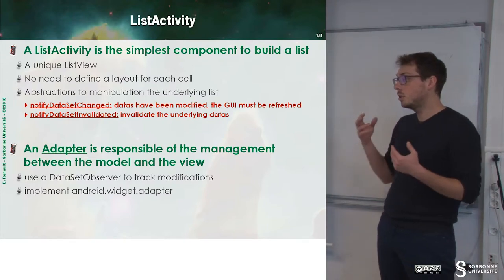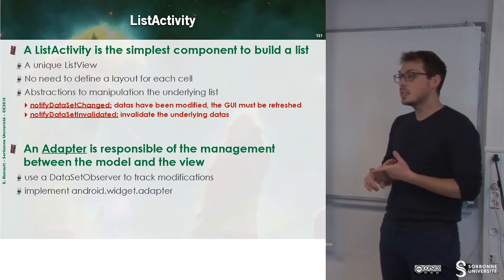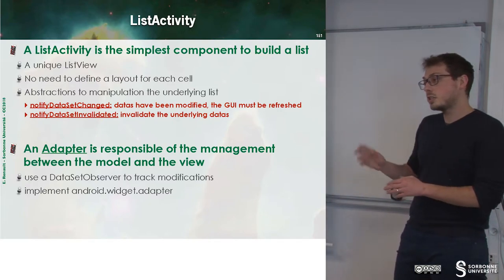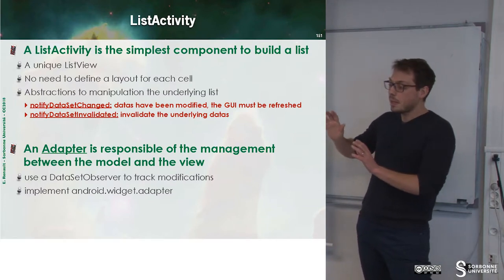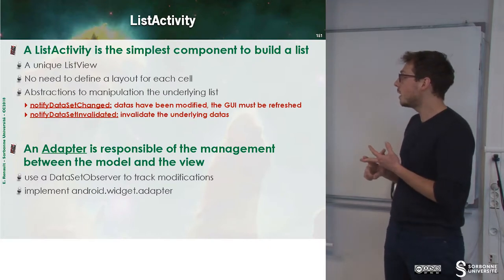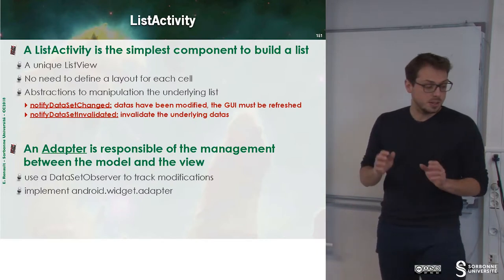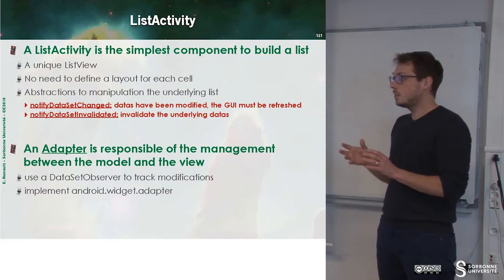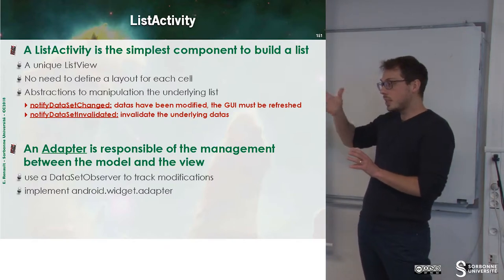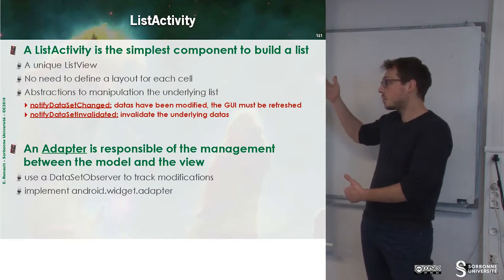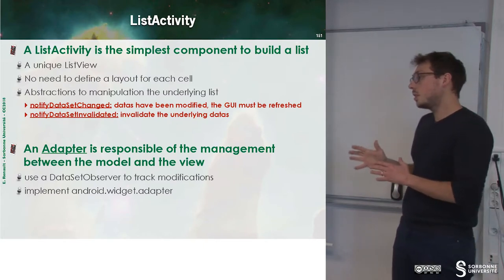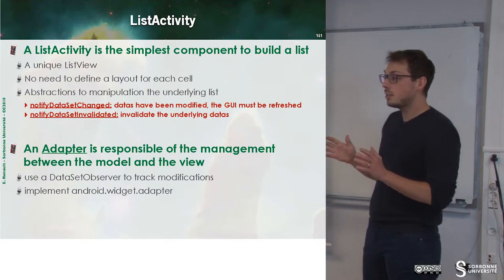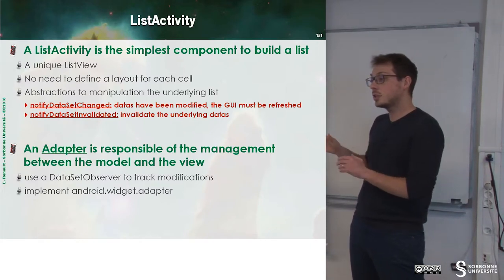There are two methods we have to understand when using such lists. The first one is notifyDatasetChange, which specifies that the model has changed, so we have to refresh the list to update the view for the user. The second one is notifyDatasetInvalidated, to invalidate the data. These methods will call the adapter, whose goal is to make the link between the view and the model — basically, it's the controller.